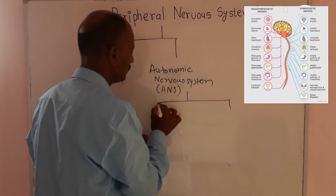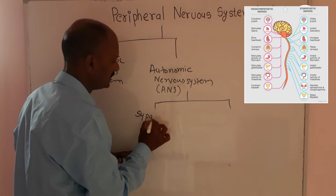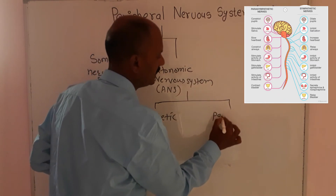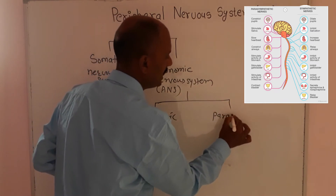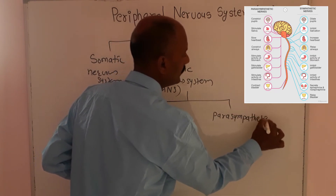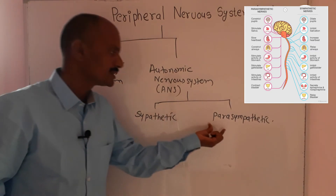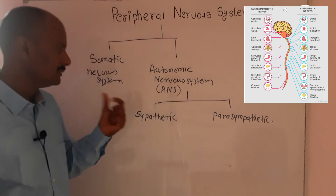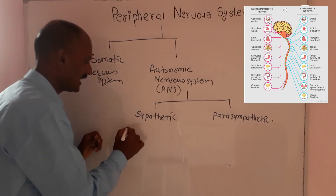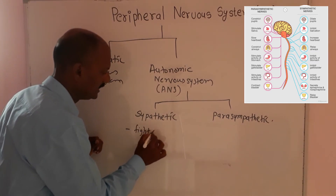The autonomic nervous system has two parts: the sympathetic nervous system and the parasympathetic nervous system. The sympathetic nervous system activates the fight-or-flight response.